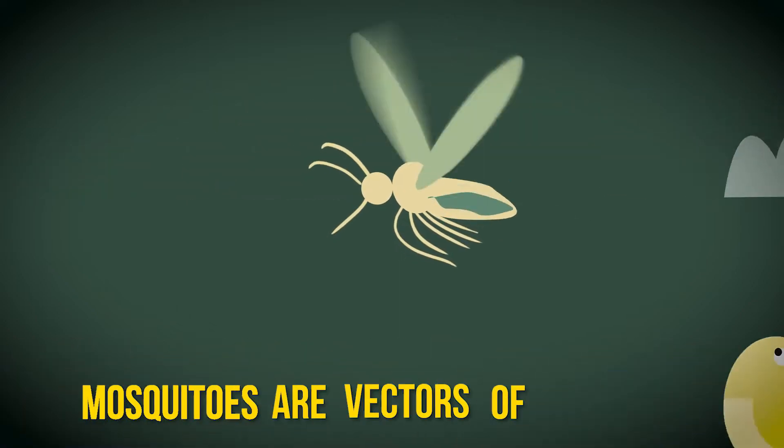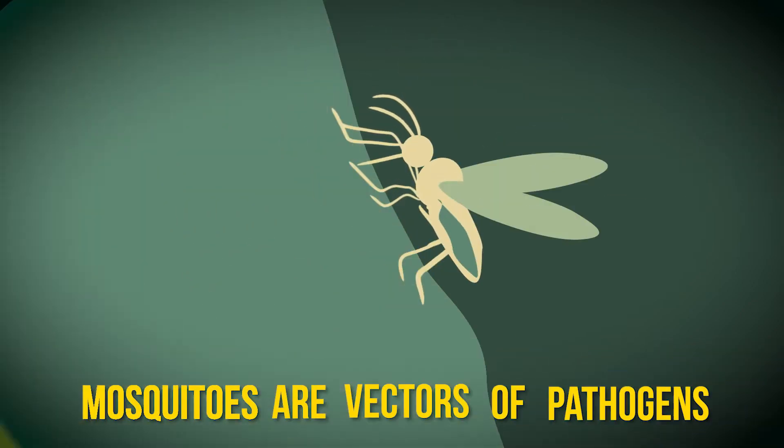Mosquitoes are vectors of pathogens — organisms that cause disease. But what does that mean for people, and how do we detect those pathogens? To understand all of this, we first have to understand the mosquito.